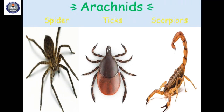Spiders, ticks, and scorpions are neither insects nor worms. They belong to a different family of animals called arachnids. Unlike insects, they have only two body parts but eight legs. They do not have wings.